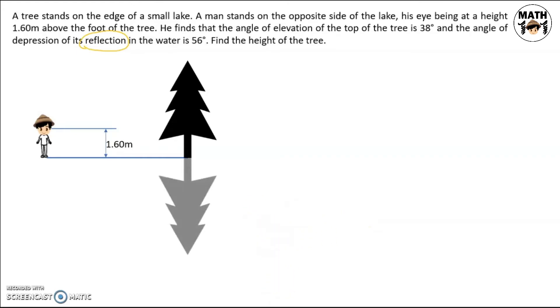Then this will be the reflection. So if the height of the tree is h, the unknown we're looking for, the height of its reflection is also equal to h. Then we're given the angle of elevation as 38 degrees and the angle of depression of 56 degrees.